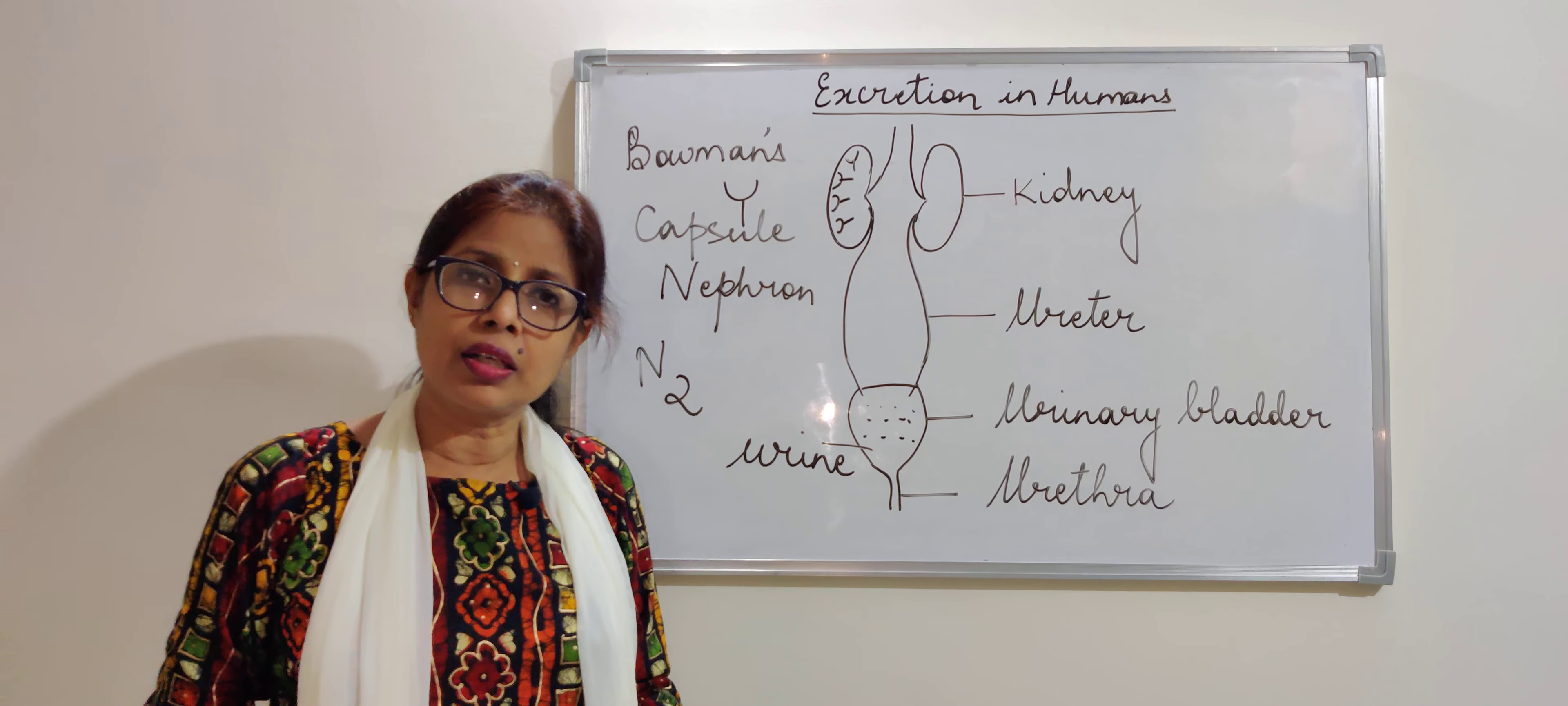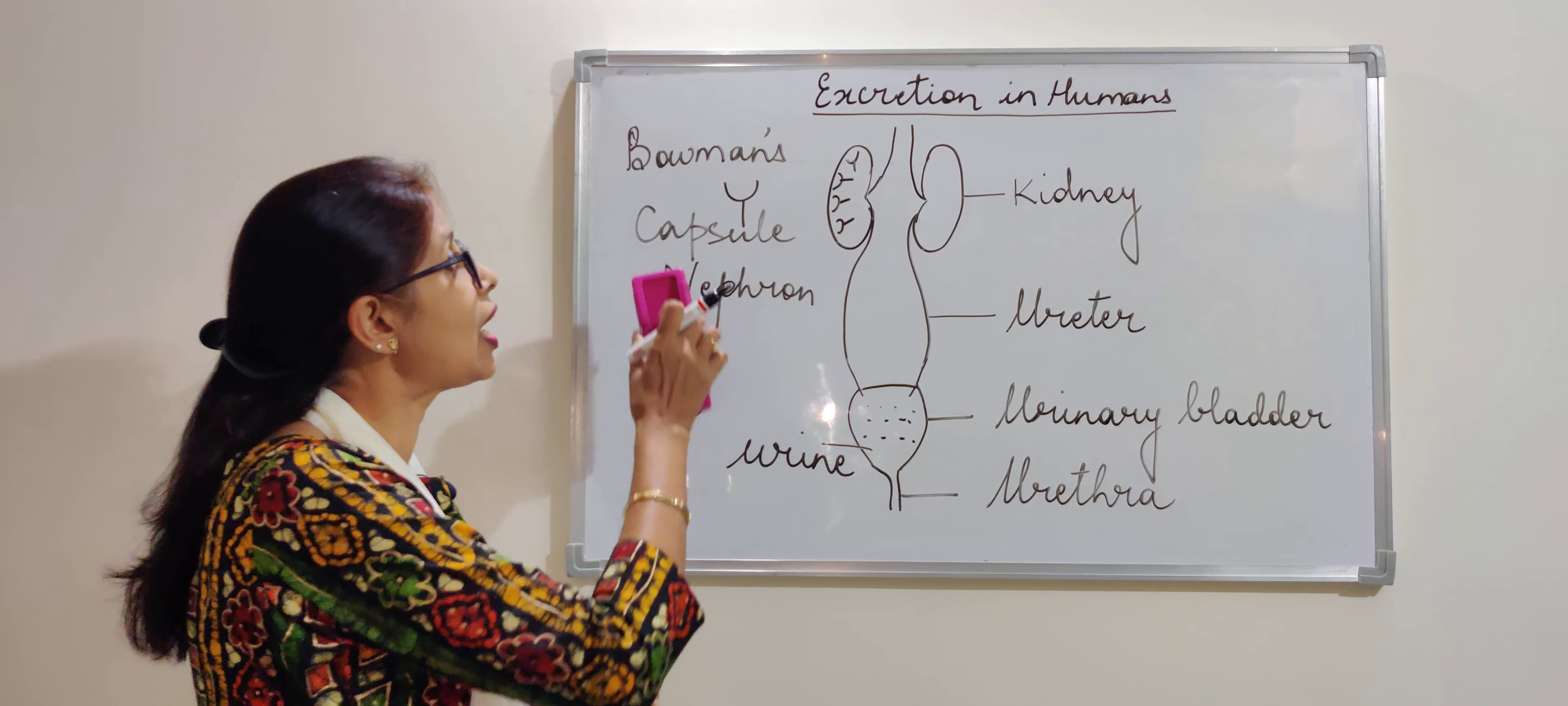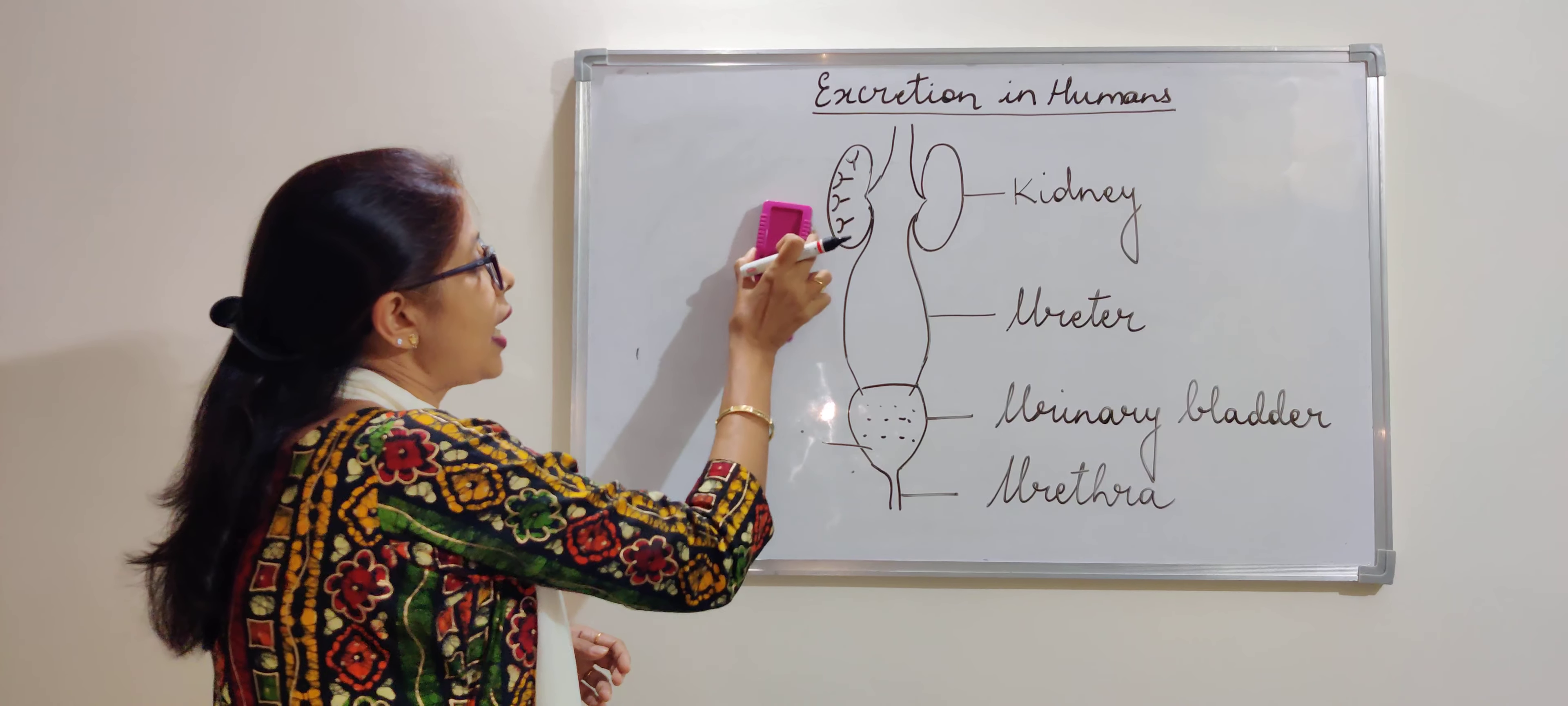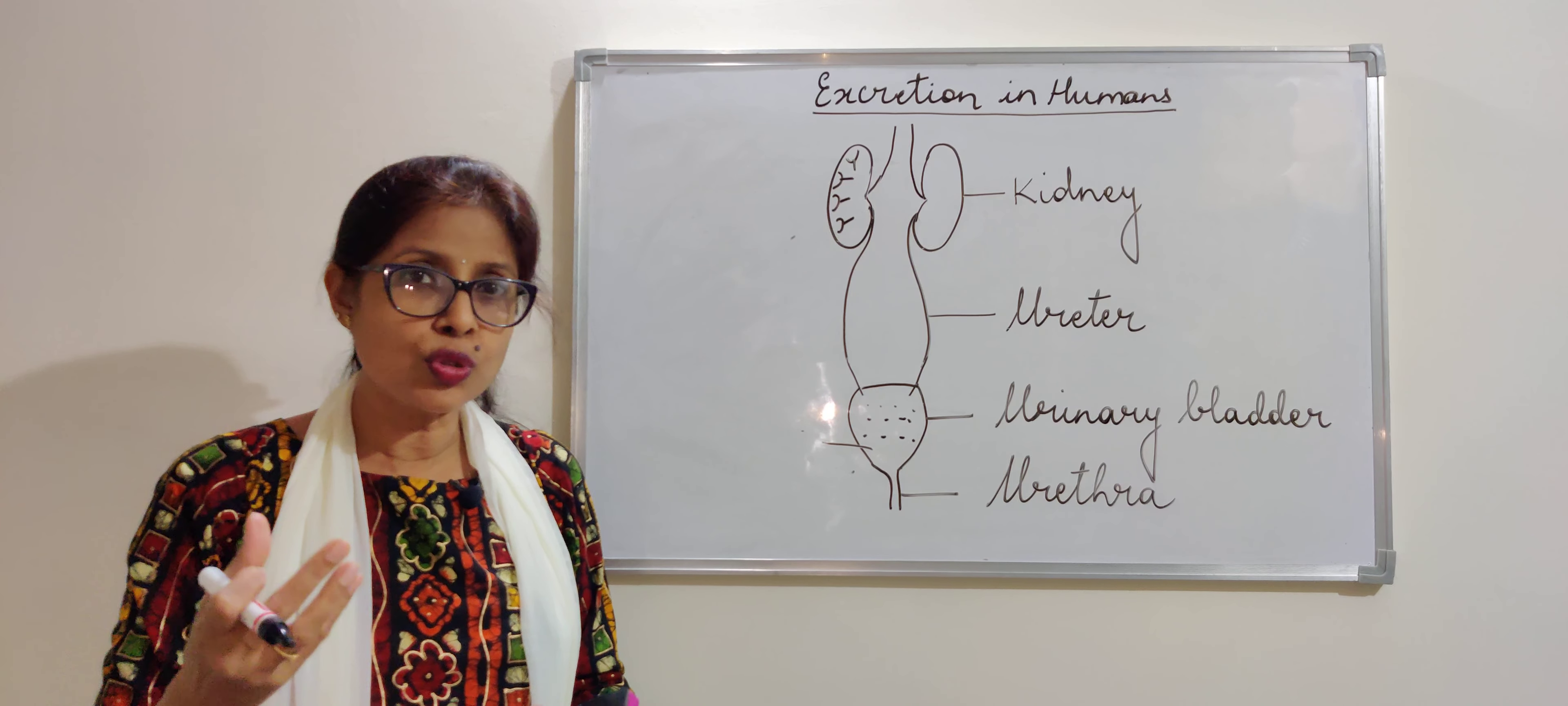But if we hear about plants, it's a very different issue. In plants, they do not have this whole system. They don't have kidneys. They don't have any such organs for excretion. So basically, what do the plants excrete? Even they need to excrete, the reason behind it is even they are living organisms. They cannot accumulate waste in them. So they have to excrete.